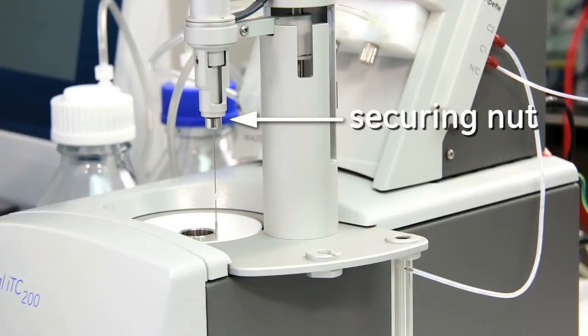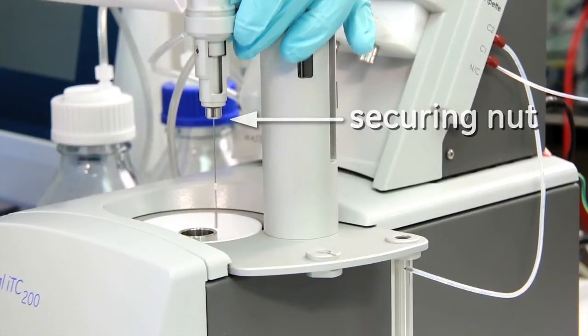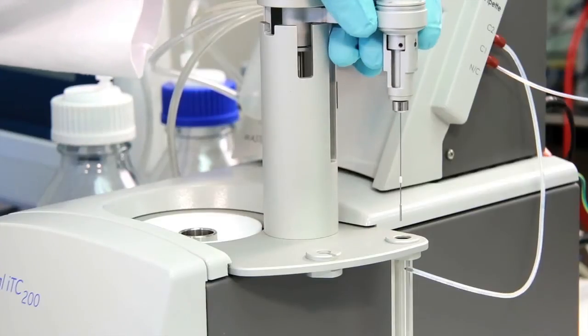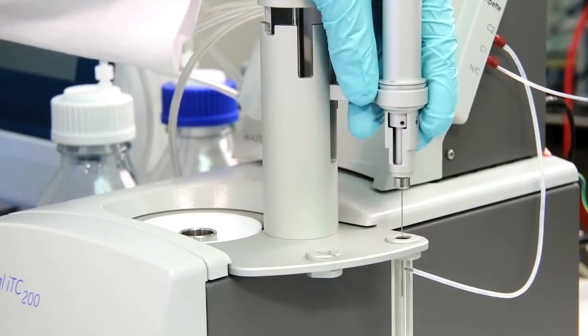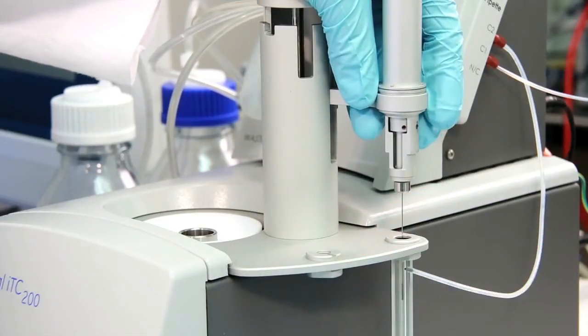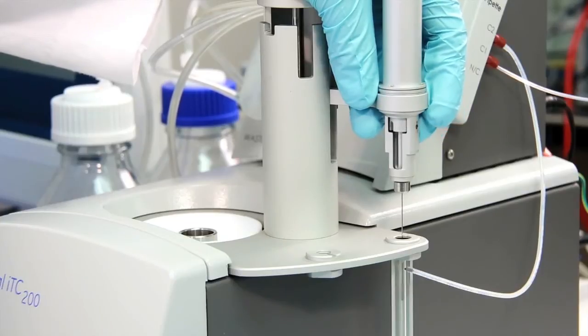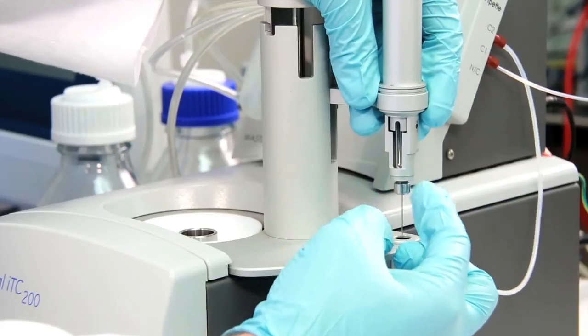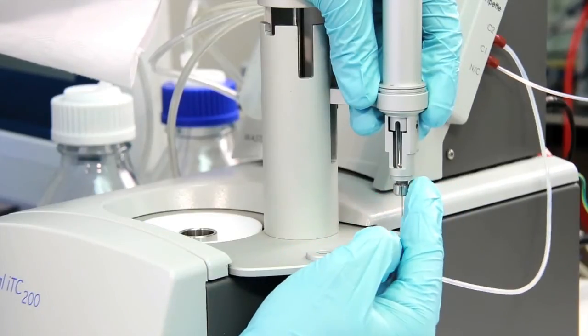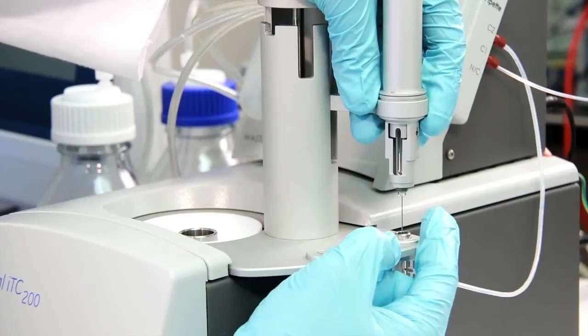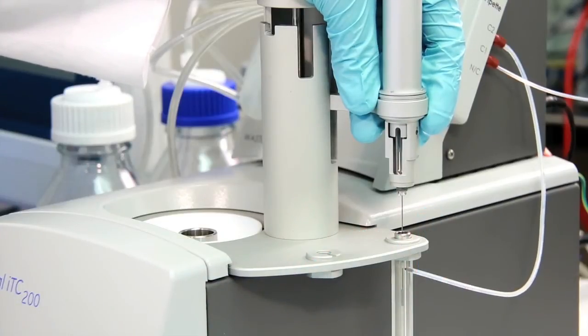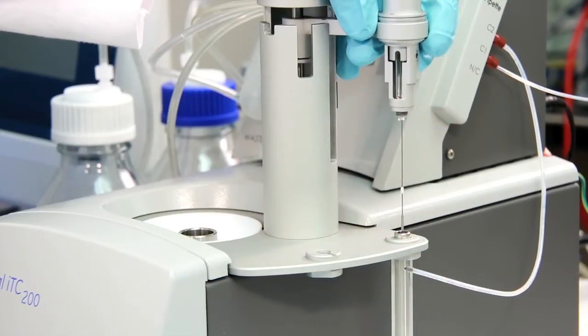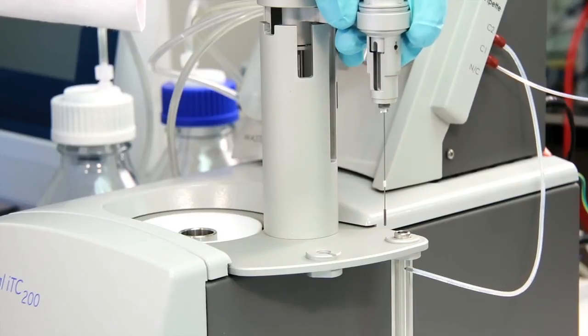To remove a syringe, we need to remove the securing nut. It's helpful to place the pipette partway into the wash station. With one hand, hold the rotating part of the pipette still while unscrewing the securing nut. Let the securing nut drop into the wash station and leave it there until you reinstall the syringe.